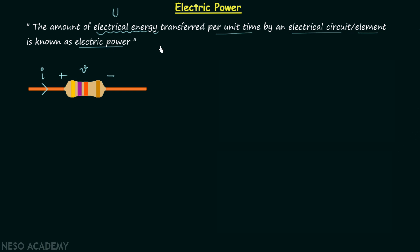To get a clear picture of why we define electric power this way, I have taken one very simple case. Analyzing this case will make the definition clearer and also give us the mathematical formula to calculate electric power. In this case I have taken the most basic circuit element — the resistance — and the voltage across the resistance is equal to V volts.